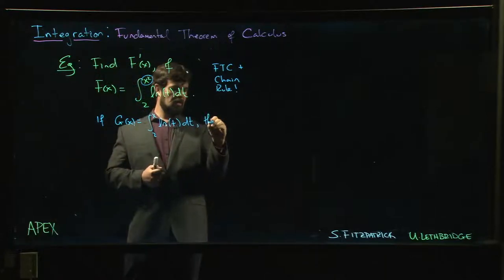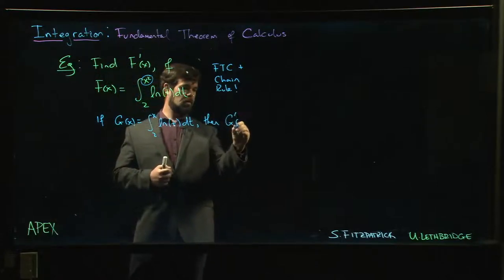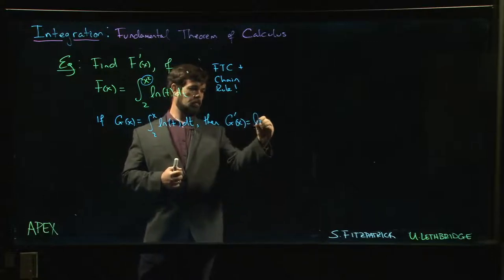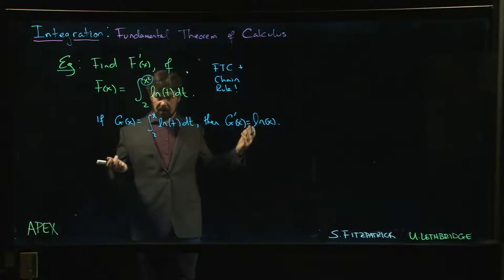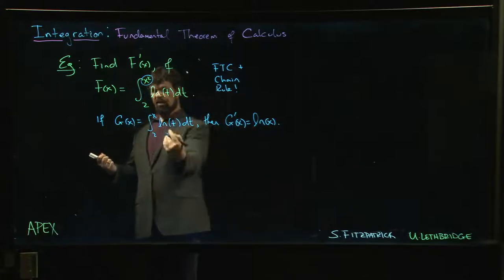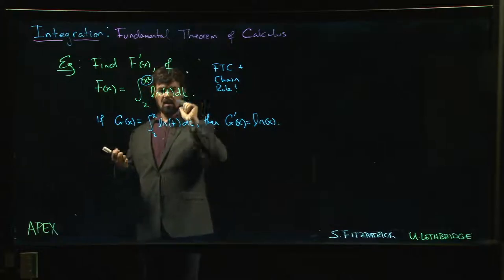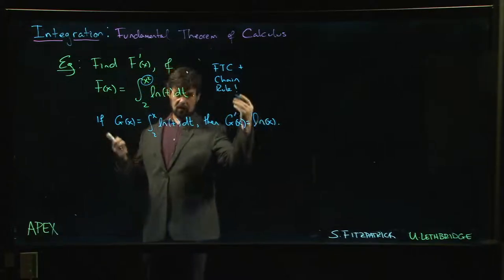Well then, we know that G prime of x is just the natural log of x, right? That's fundamental theorem of calculus part one exactly. We have a constant, we have an x, we have some function of t—we just replace t by x and we have the derivative done.